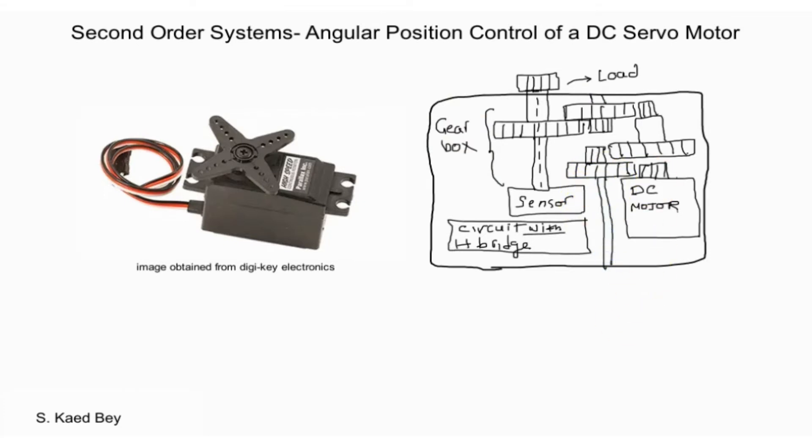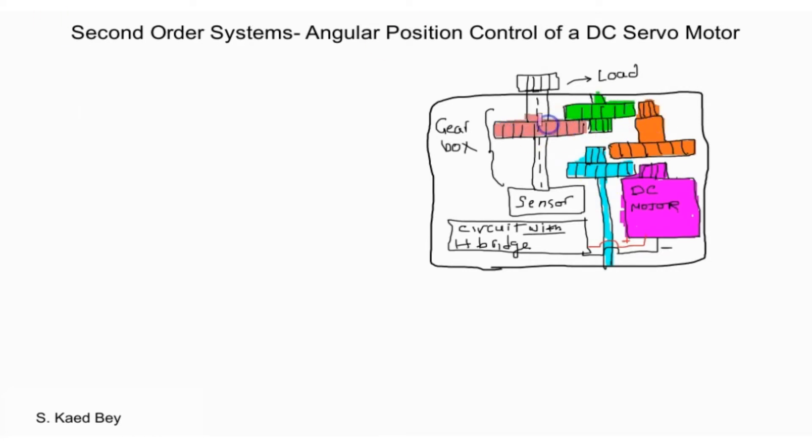A hobby servo DC motor consists of mainly the DC motor, gear assembly, a sensor which is in this case a potentiometer, and a controlling circuit with an integrated H bridge. The last motor shaft in the gear assembly is connected to the potentiometer and as the motor rotates the output arm of the potentiometer will also rotate. This generates a signal representing the angular position changes which will be the feedback signal to the control circuit.